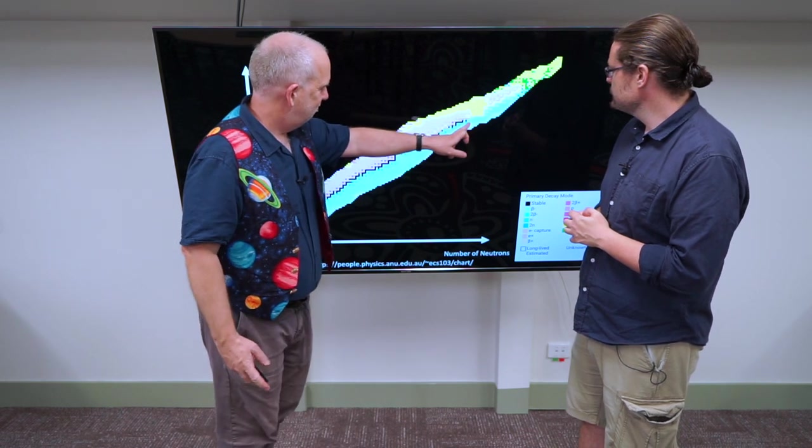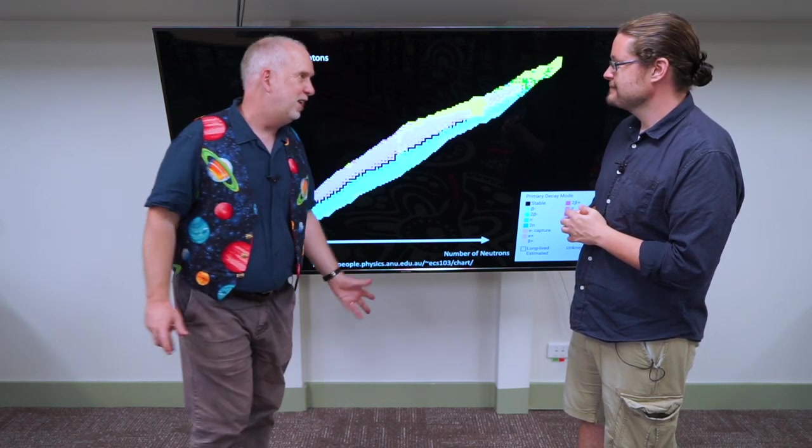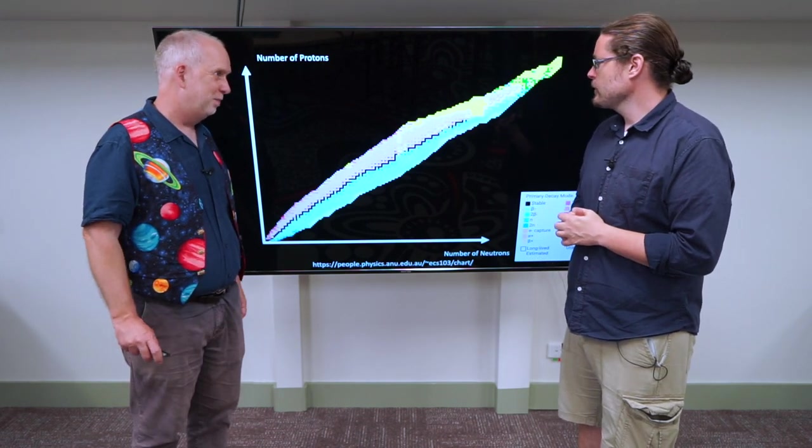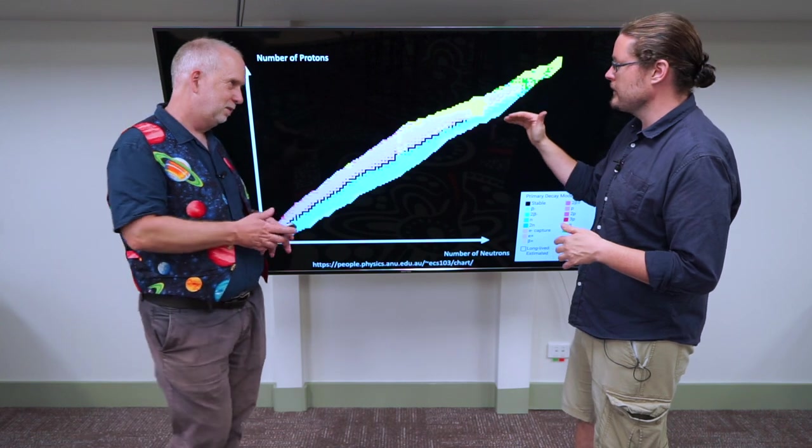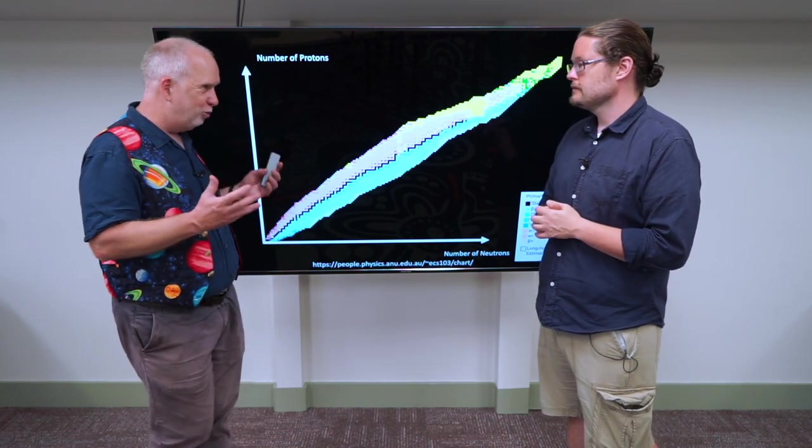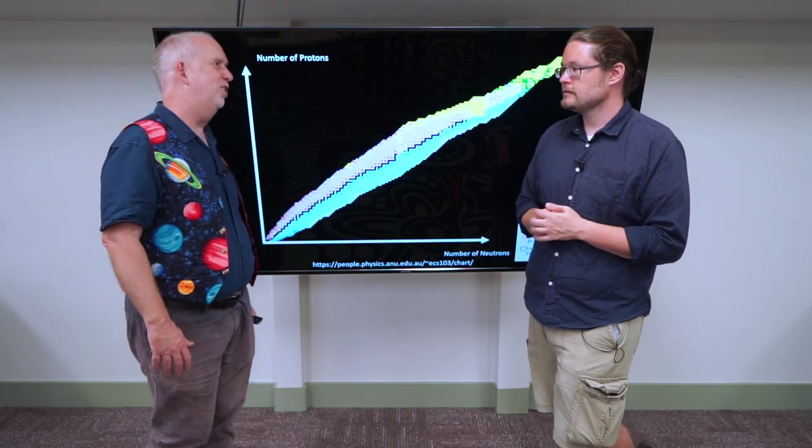But at this point, roughly uranium - I think lead is the heaviest stable isotope - anywhere beyond that it turns out nothing is stable. So essentially you just cannot get this balance enough so it's stable. Even with the perfect balance of neutrons and protons, there's just nothing that's going to stay there forever.